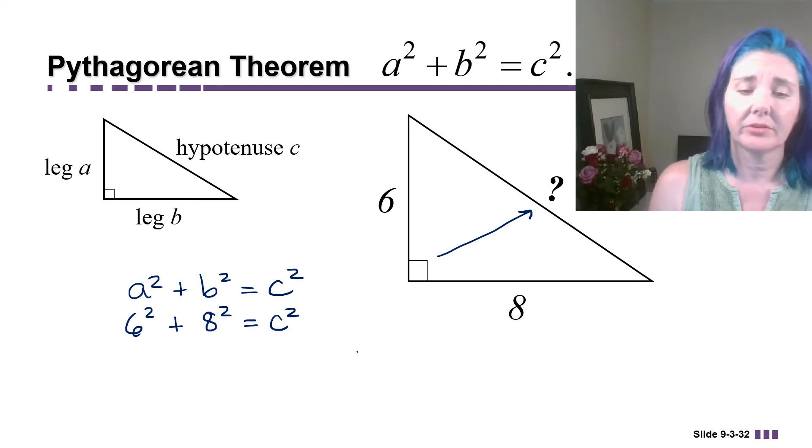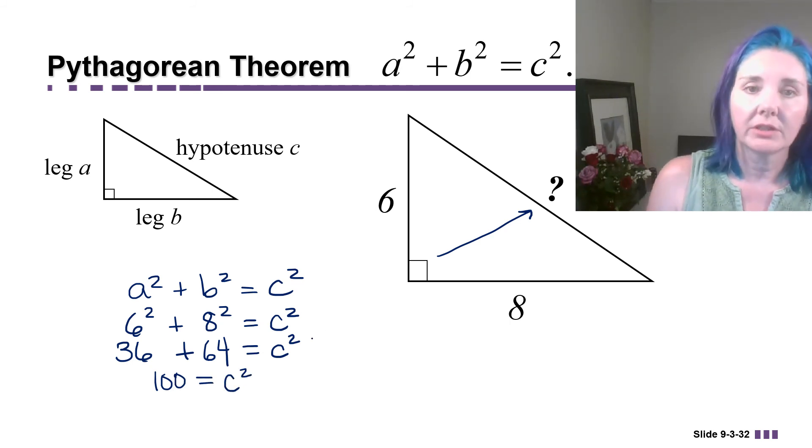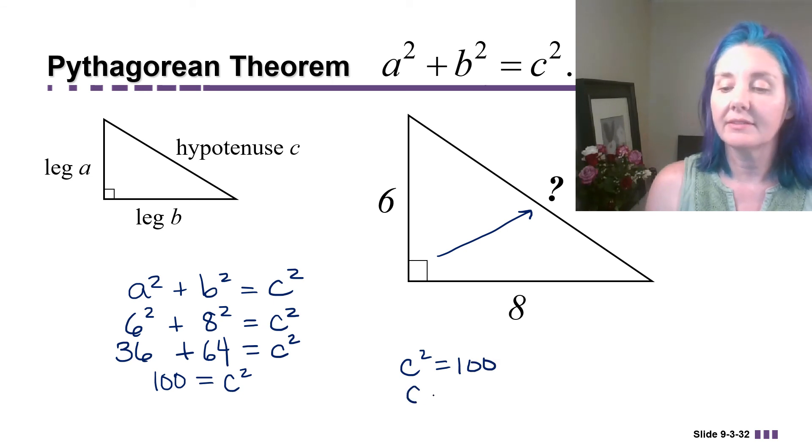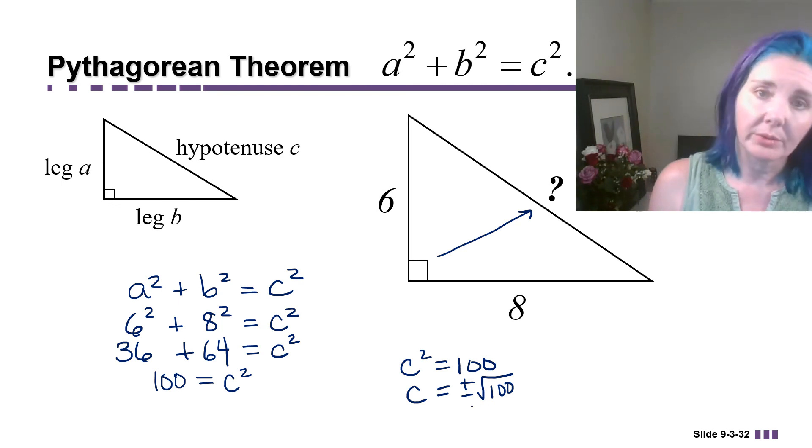That has to be the side opposite the right angle. So this gives us 36 plus 64 equals c squared, which means 100 is equal to c squared. So here we have the situation where we have a variable squared equal to a number. We can use the square root property. So if c squared equals 100, that means that c is either plus or minus the square root of 100. Square root of 100 is 10, so c is equal to plus or minus 10.